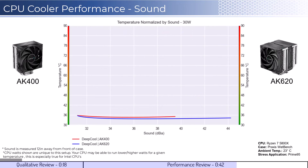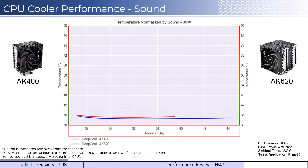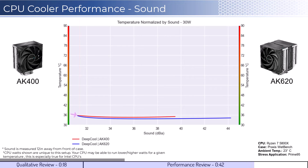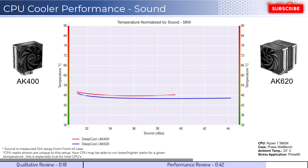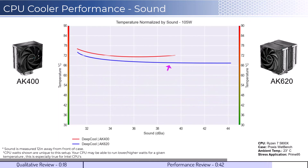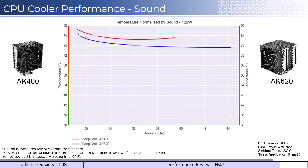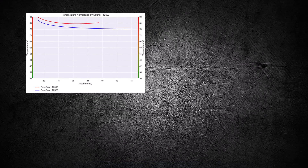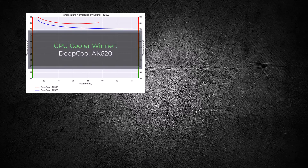For the second set of comparisons, we will look at the performance for a given noise level. The graph shown has noise on the bottom axis while keeping the temperatures on the side axis. Note that lower is still better for this graph. When comparing the coolers by normalized noise levels, we can see that both coolers perform similarly at idle CPU levels. As we increase the watts to 105, the AK620 cooler begins to outperform across comparable noise levels, and as we increase the wattage to 125, we can see that this trend continues. Overall, the AK620 cooler has materially better cooling performance for a given noise level, making it the winner for this comparison.